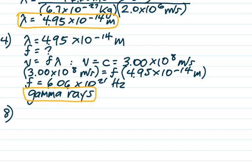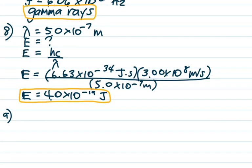Number 8 is pretty straightforward. They gave you the wavelength and they want the energy. E equals hc over lambda. Here we have it, 4.0 times 10 to the negative 19 joules. Two sig figs because there were two sig figs on the wavelength.